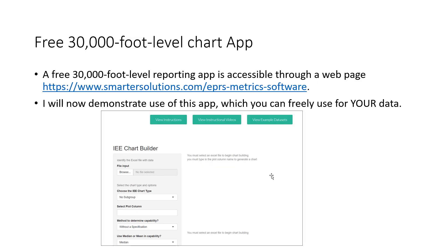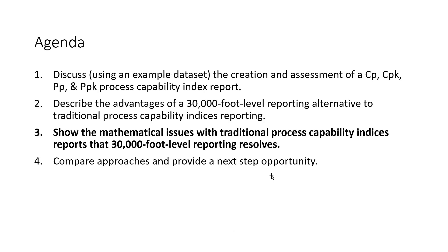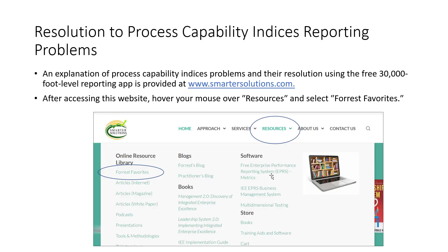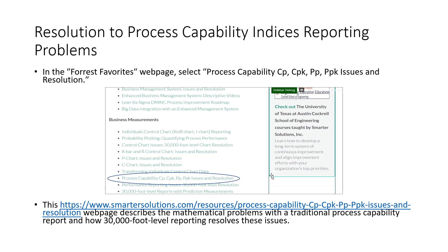Returning back to the PowerPoint presentation, I just described the free 30,000-foot-level reporting app. The next topic is a very important one: showing the issues with traditional process capability indices reports that 30,000-foot-level resolves. To understand these issues, you would want to go to SmarterSolutions.com, hover over Resources, and select Forest Favorites. That would lead you to a page with many links, and the link most relevant to this explanation of process capability would describe the mathematical problems with process capability indices reporting.